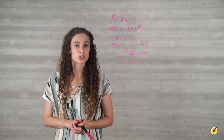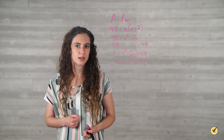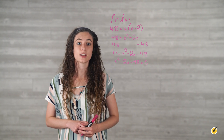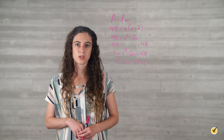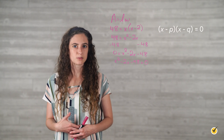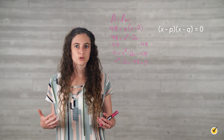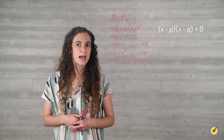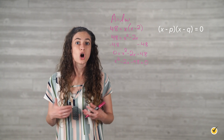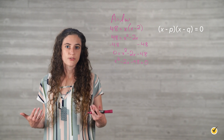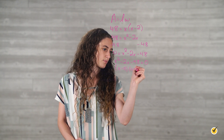Now that we have the area expressed as a quadratic equation, we can create a graph to interpret possible solutions. To graph the parabola, we need the coordinates for its x-intercepts and vertex. We find the x-intercepts by factoring x squared minus 2x minus 48 equals 0. We identify two numbers with a sum of negative 2 and a product of negative 48, which are negative 8 and 6. So we can factor as x minus 8 times x plus 6 equals 0.